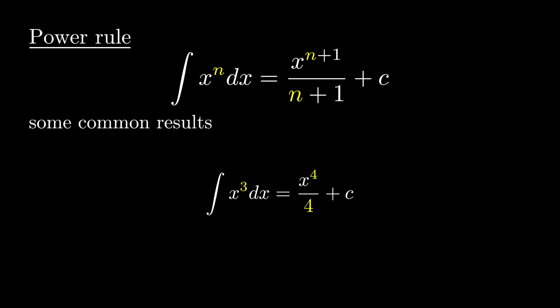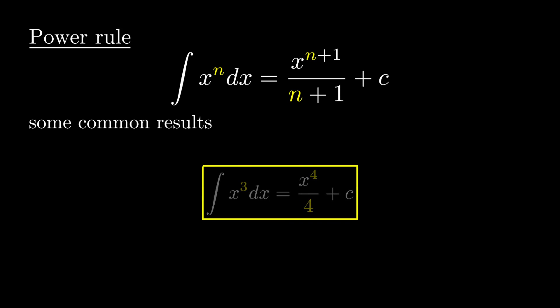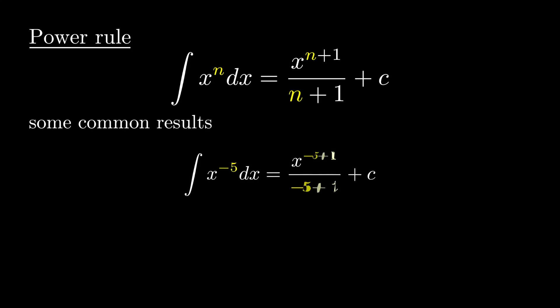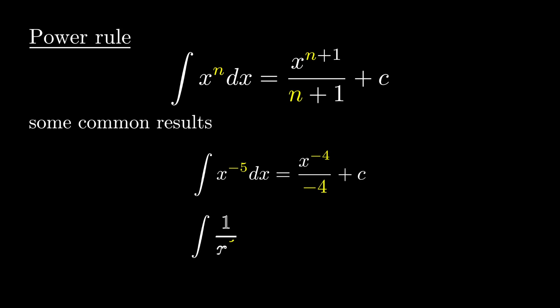Integration of x^(-5) dx. Here we are replacing n with -5, so we get x^(-5+1) over (-5+1) plus c. Rearranging, the left-hand side is integration of 1/x^5 dx, and the right-hand side is -1/(4x^4) plus c.